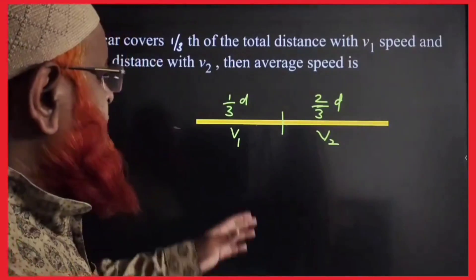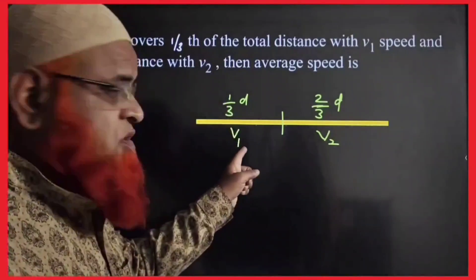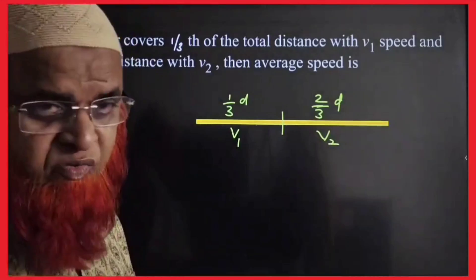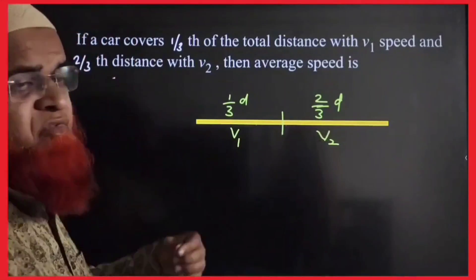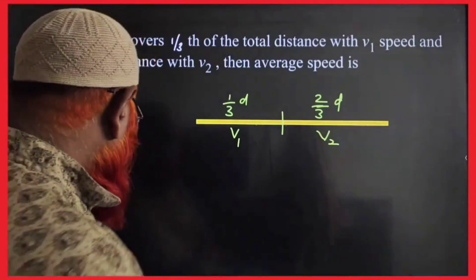Dear friends, this is the case of an average speed, where one third of the total distance with velocity v1, two third of the total distance with velocity v2, find an average speed. For that, blindly, I will do one small shortcut here.